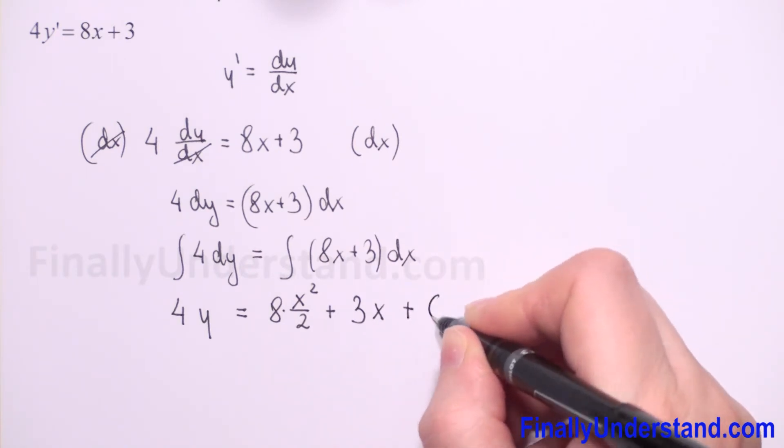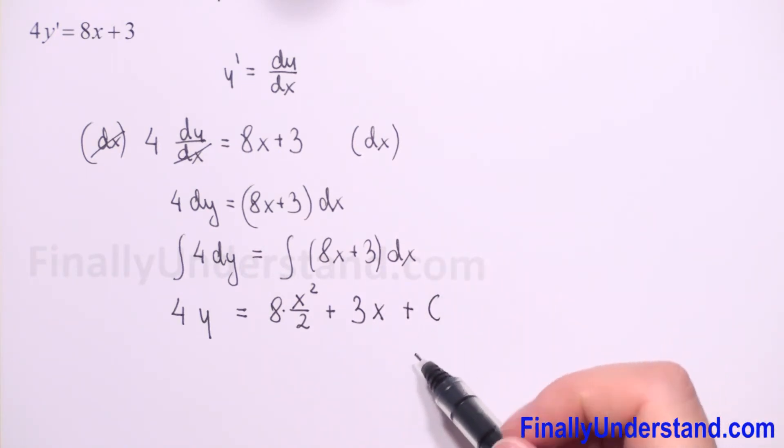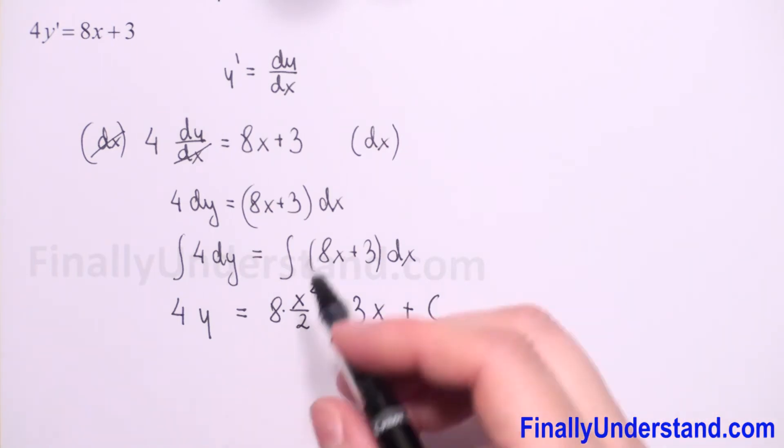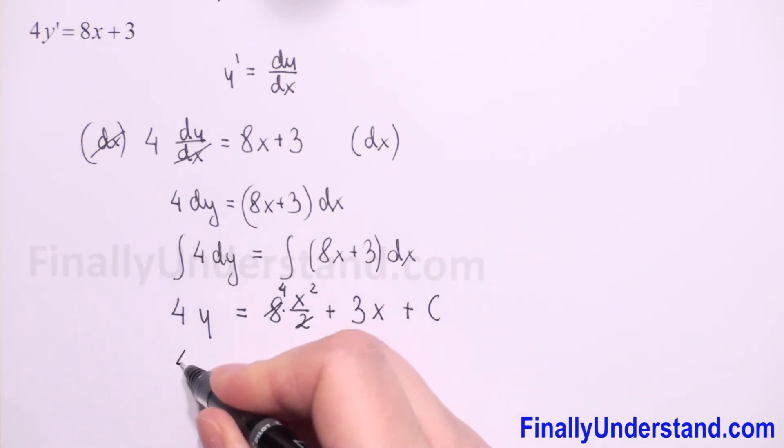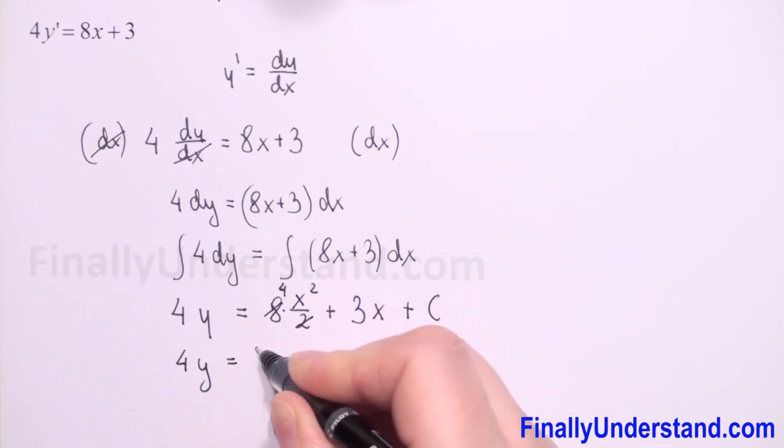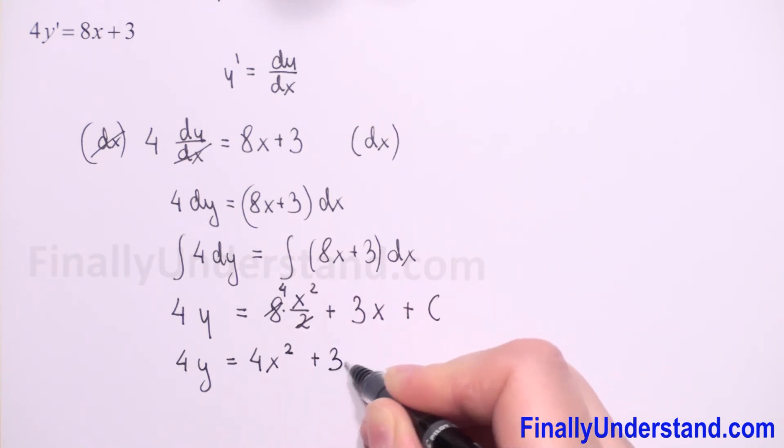And we have to add a constant. We only add the constant to one side because when we add or subtract a constant it's still a constant. So now we can reduce 8 and 2 to get 4. So we have 4y is equal to 4x squared plus 3x plus c.